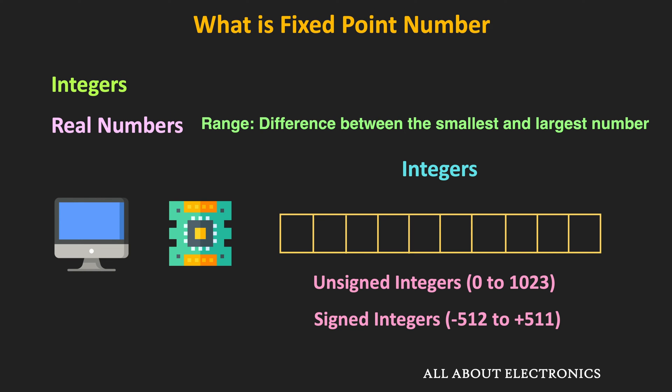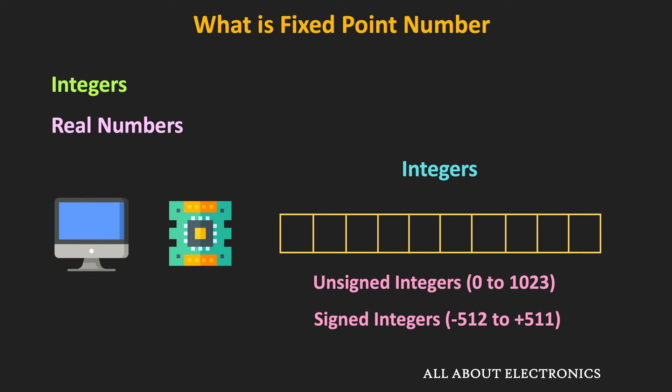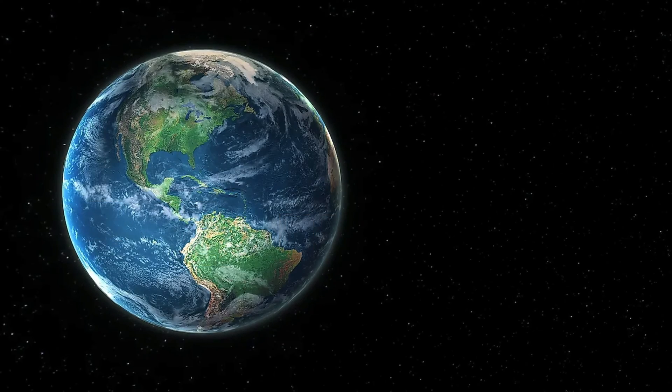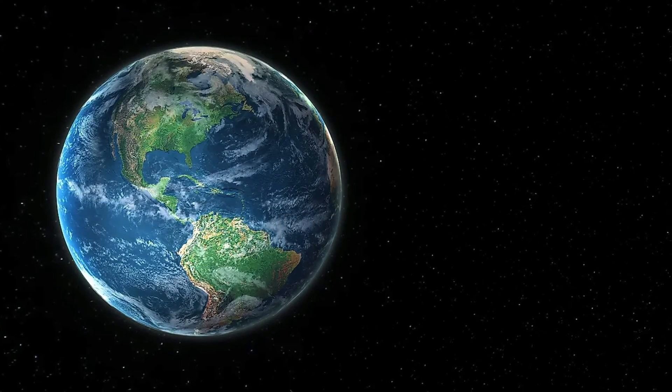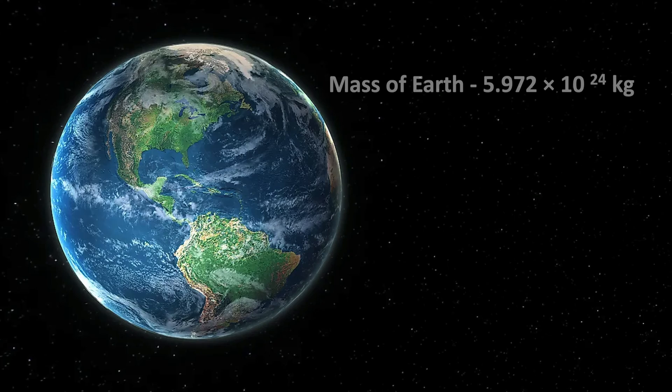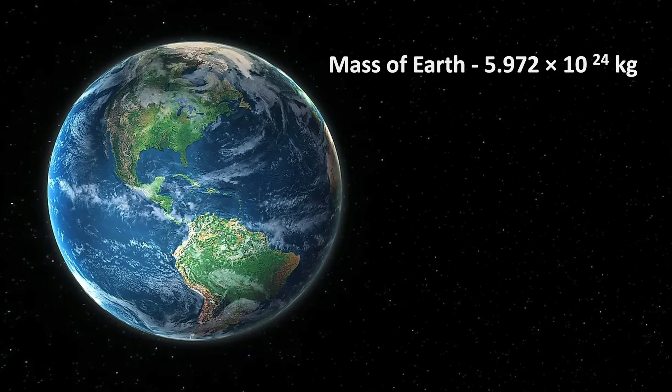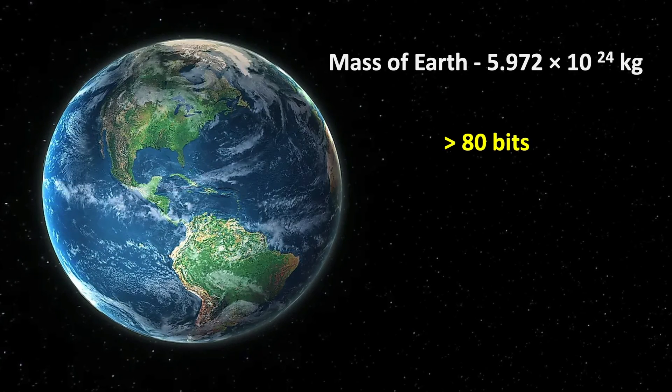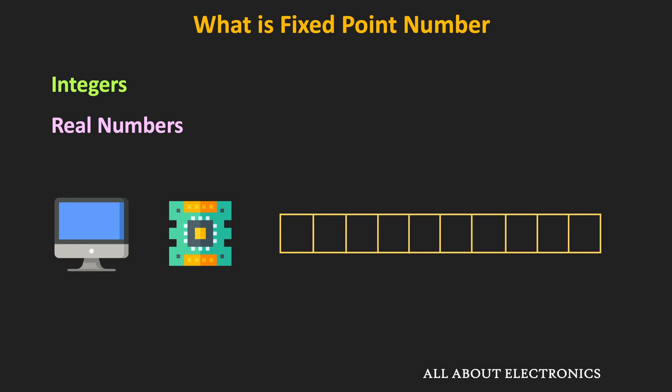Here, the range refers to the difference between the smallest and the largest number. By increasing the number of bits we can increase this range. But still, if we want to represent very large numbers like 10 to the power 24 or 25 — for example, the mass of the earth — then we need more than 80 bits. The issue of range becomes even more prominent with real numbers.